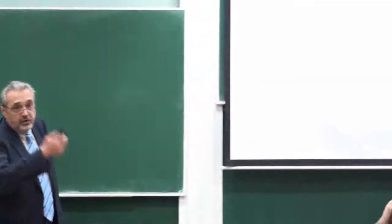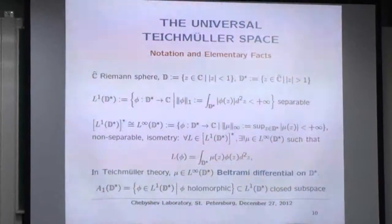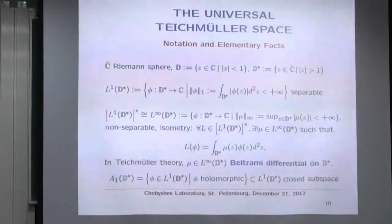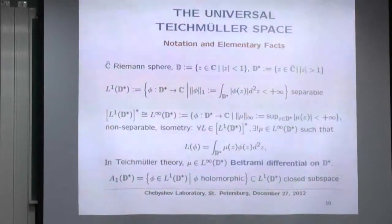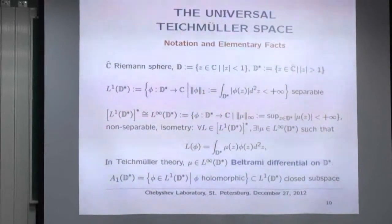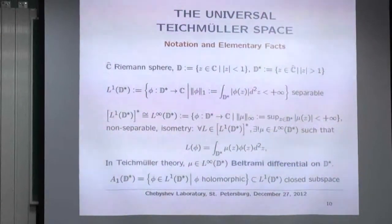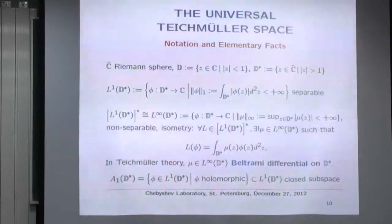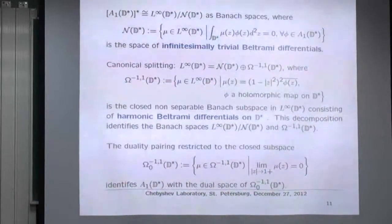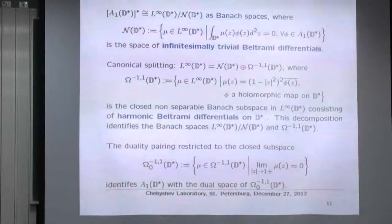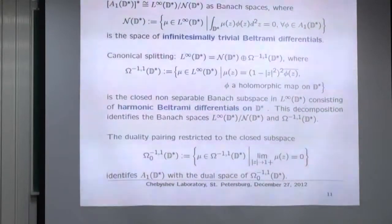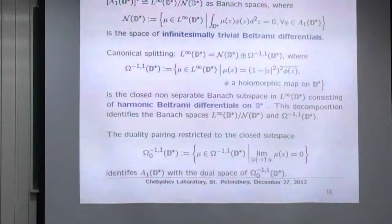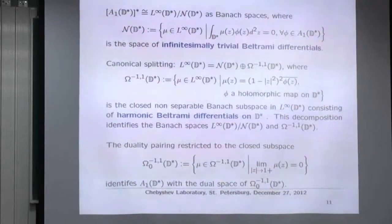First, some elementary facts from function theory. Here is my Riemann sphere Ĉ, the open unit disk D, and the exterior D*. I have the L¹ space and its dual L∞ — these are non-separable, bad Banach spaces, but I have to deal with them. The duality is enforced in the standard way. Writing A¹, A², A∞ for the analytic subspaces: this is holomorphic L¹, a closed subspace.